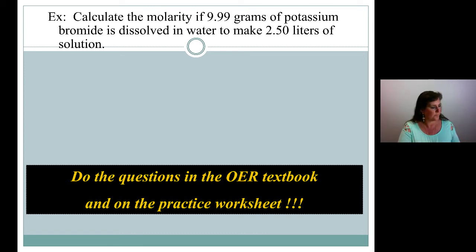So what's the charge on K? Column 1, plus 1. Very good. Br, column 7, minus 1. So we have a plus 1, minus 1 ionic compound, metal and non-metal, plus 1, minus 1. That adds up to 0 already. So it is just 1K and 1Br.